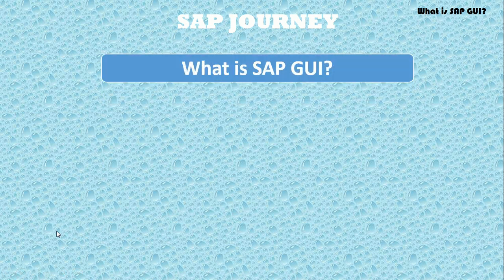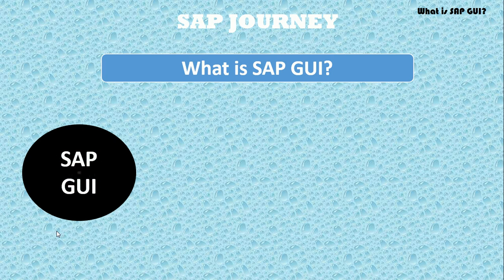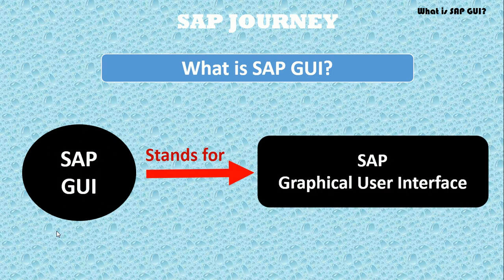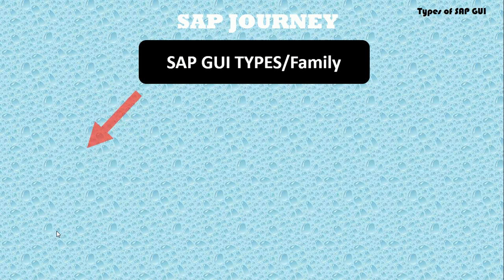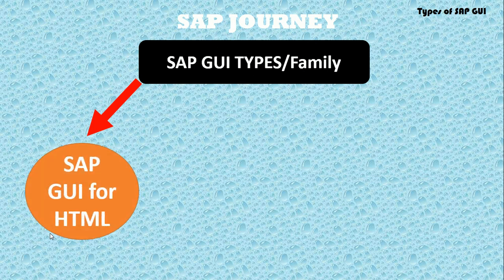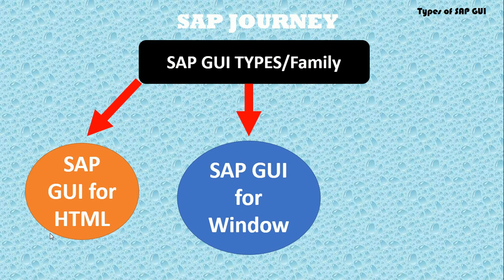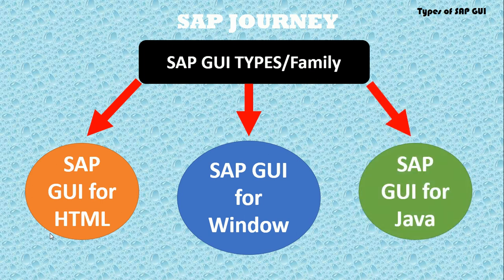Now, what is SAP GUI and how many types of SAP GUI are there? There is the SAP GUI family: first is SAP GUI for HTML, second is SAP GUI for Windows, and third is SAP GUI for Java.